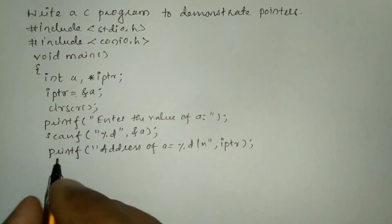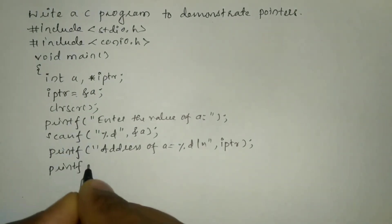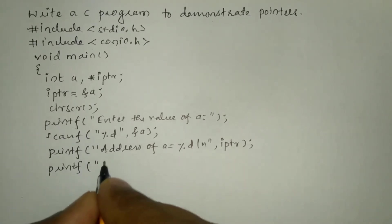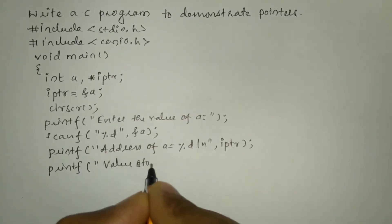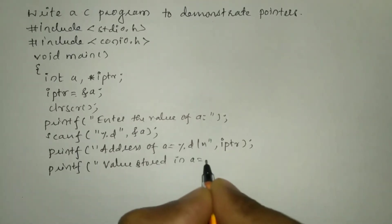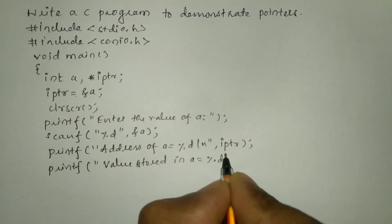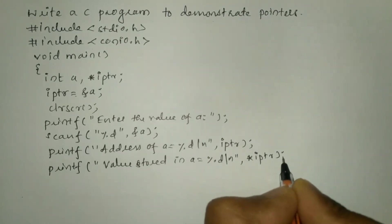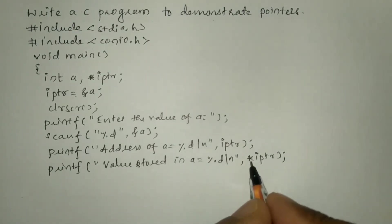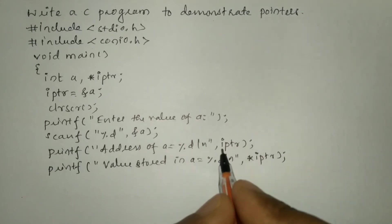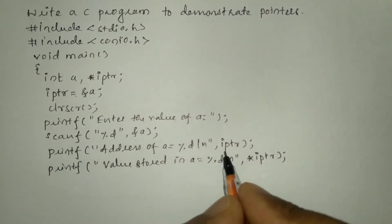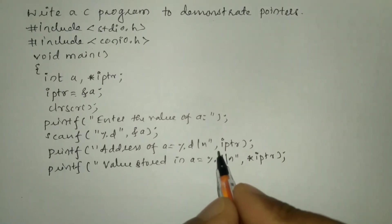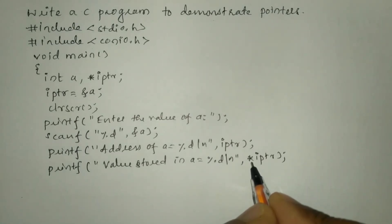Next I will write printf, in double quotation marks: value stored in a is equal to %d, backward slash n, then put comma and write asterisk symbol IPTR, close the bracket and put semicolon. Whenever we write the asterisk symbol it always returns the value stored in the address, while writing IPTR without the asterisk symbol returns the address of the variable. This is called the indirection operator.